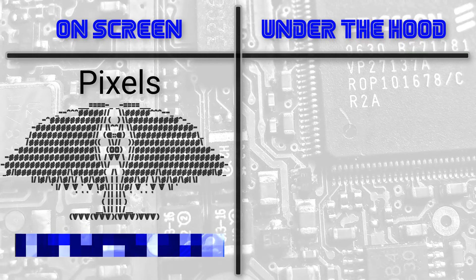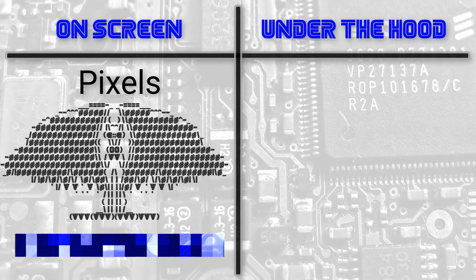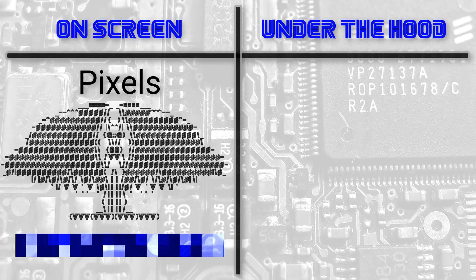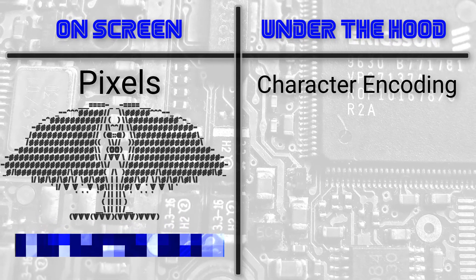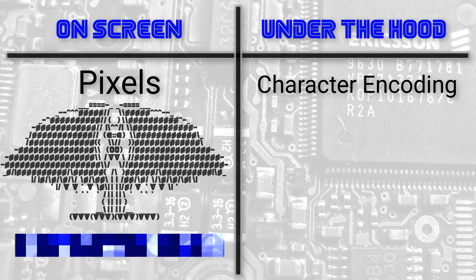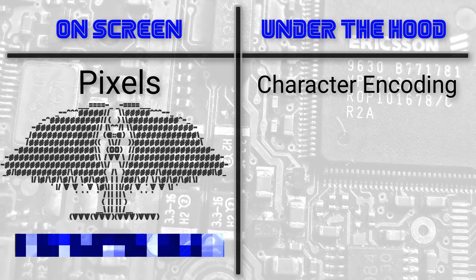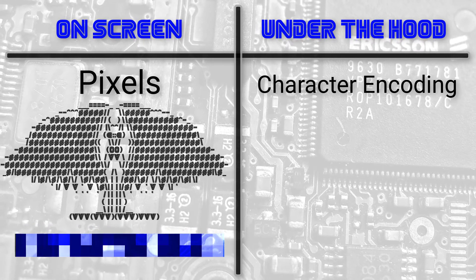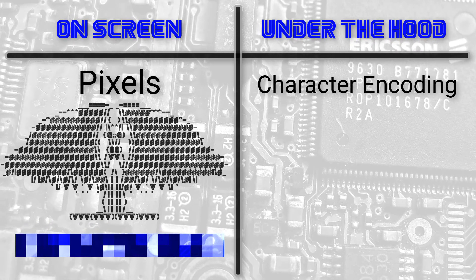So how do computers see textual data? For this, we need to talk about character encoding. Character encoding, used as a verb, is the process of creating a reference for each character in some set of characters.